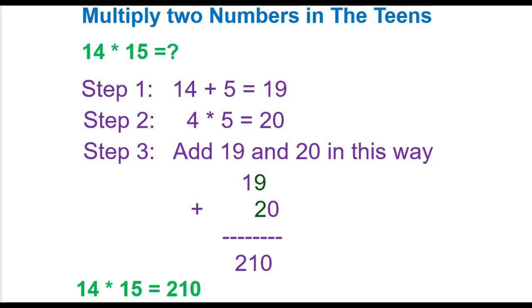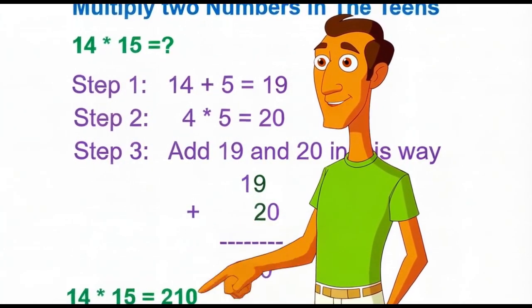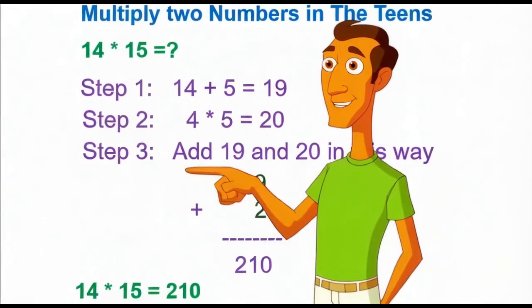There is a simple and smart way to calculate. Step 1: Add the first number and one's place of the second number. 14 plus 5 equals 19. Step 2: Multiply both the one's place of the first number and second number. 4 times 5 equals 20.